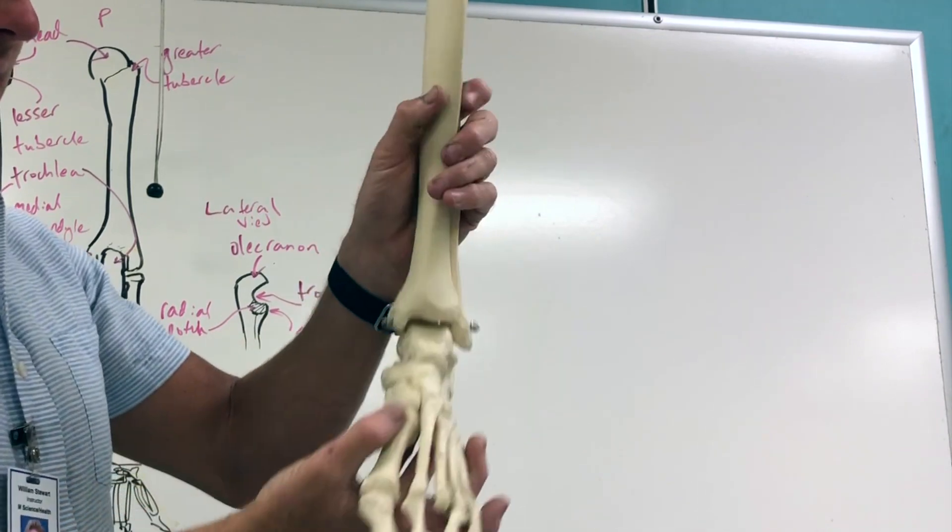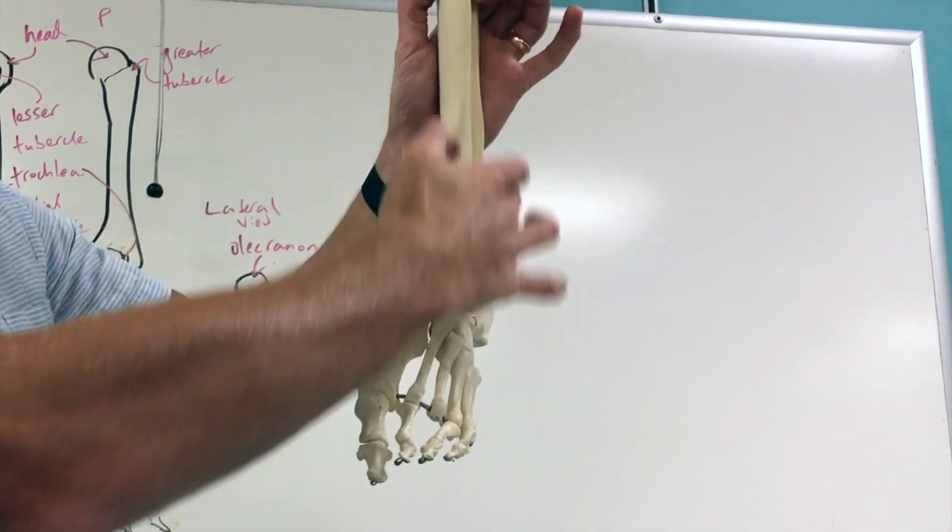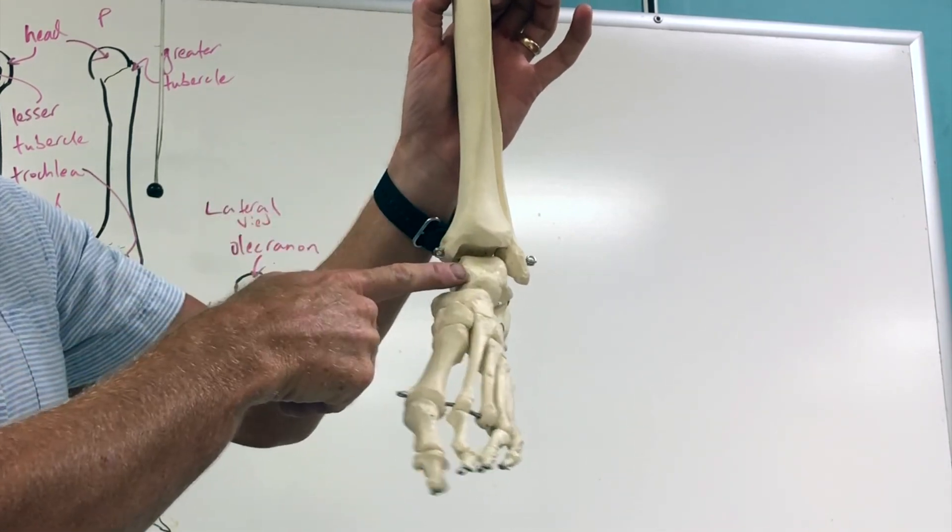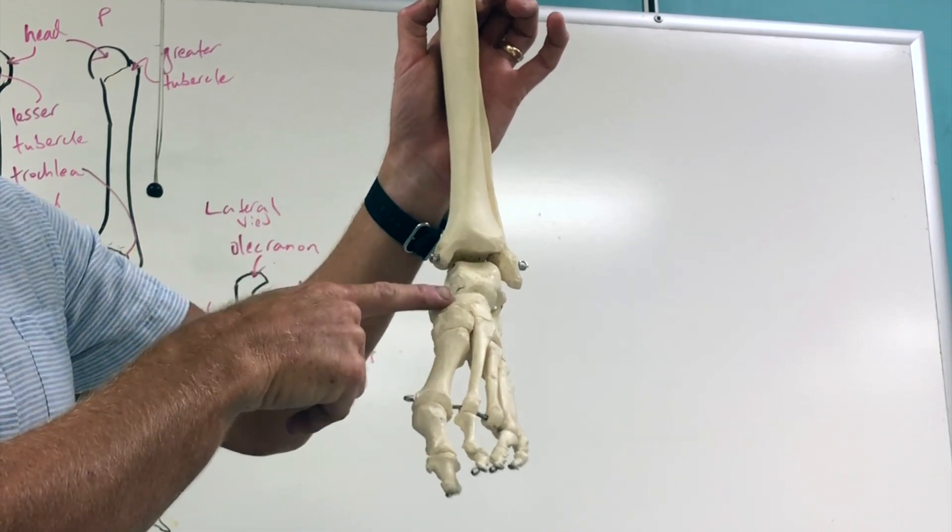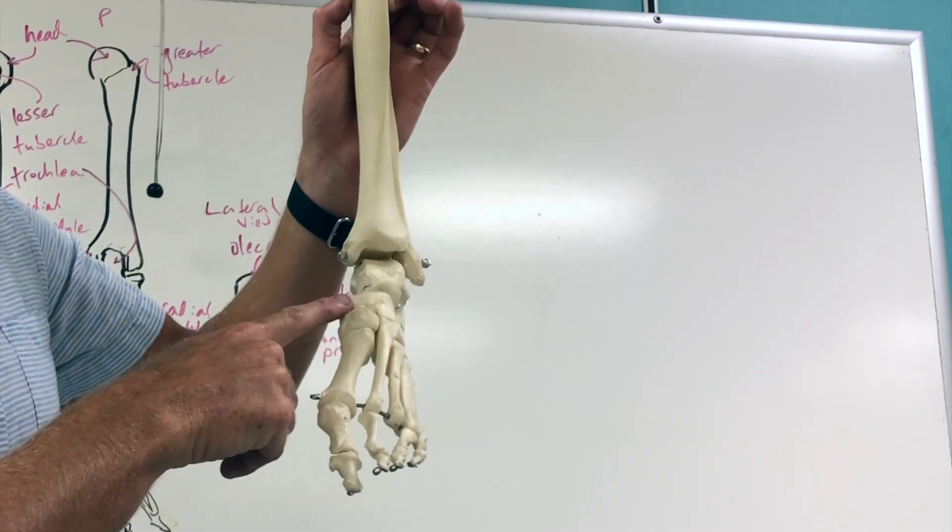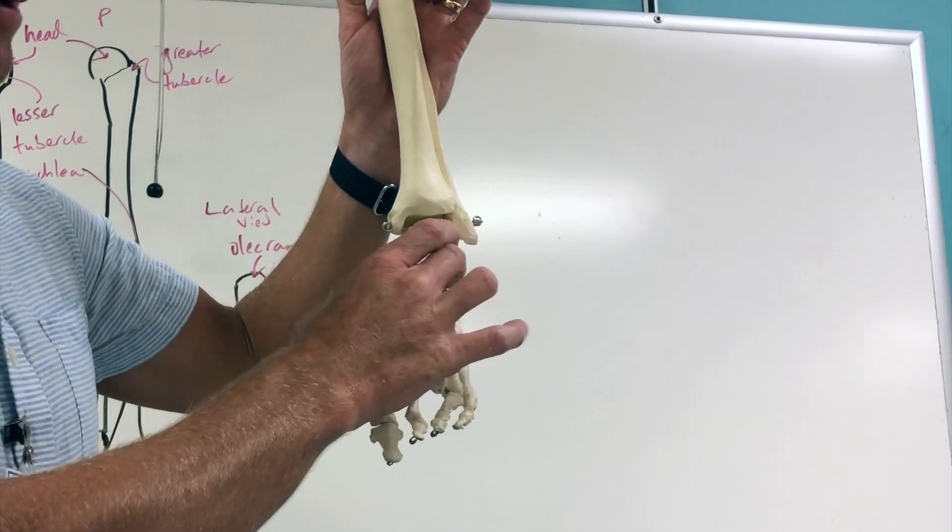As we switch over to this anterior view of the front right here, you're gonna have the tibia. The fibula is on the lateral side. Remember that talus is what connects the tibia to the rest of the foot. Here you're gonna have the navicular and this is where you can see all three cuneiform bones. You see the medial, intermediate, and the lateral cuneiforms.